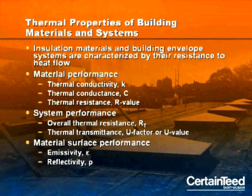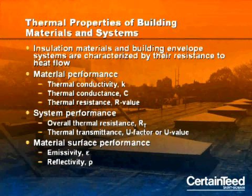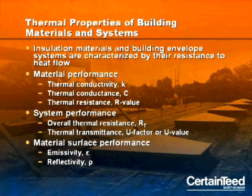Here's a rundown of how thermal properties of various materials and systems are rated. As we've seen, insulation materials and building envelope systems are characterized by their resistance to heat flow. Here are the values you may find in the literature. Material performance can be rated according to thermal conductivity, K, thermal conductance, C, and thermal resistance, R value.